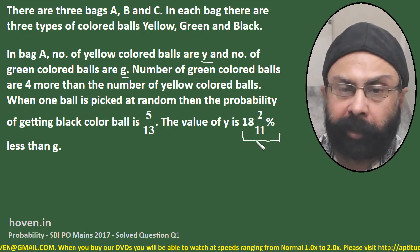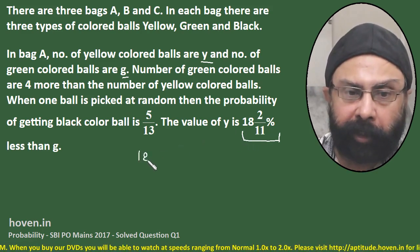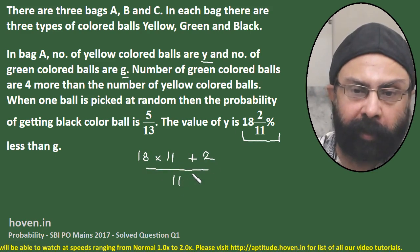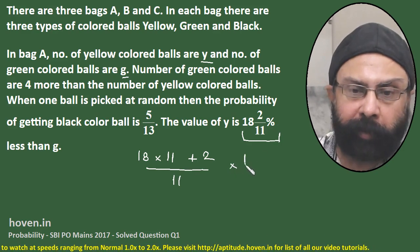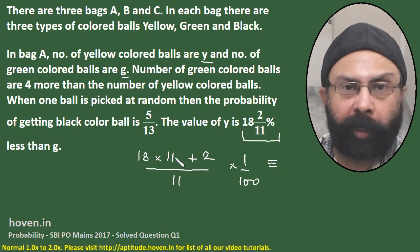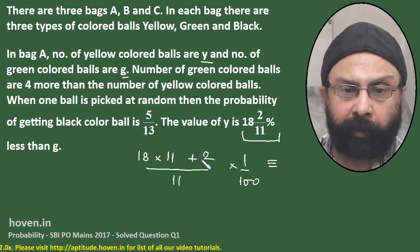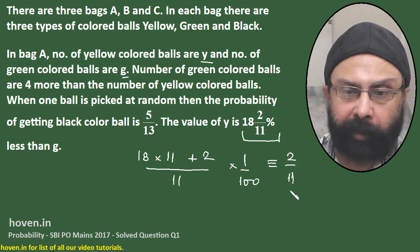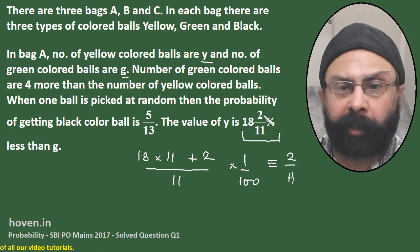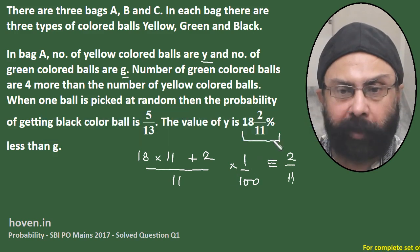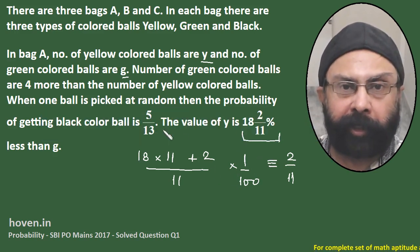Let us solve this figure: 18 2/11 percent. It will be 18 multiplied by 11 plus 2, divided by 11, and for the percent we bring 100 down. So 18 into 11 is 198, plus 2 is 200. 200 by 11, and this 100 gives me 2 by 11. So this seemingly tough figure just translates to 2/11.